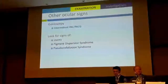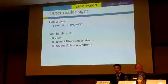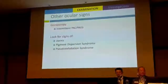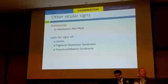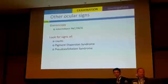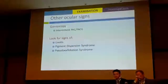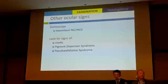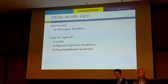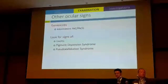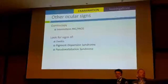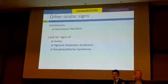We need to perform gonioscopy even as neuro-ophthalmologists, so that we can rule out intermittent angle closure, and we should look for signs of uveitis. It has happened not rarely that patients with a history of Posner-Schlossman syndrome may have normal intraocular pressure at the time of seeing the ophthalmologist, but there are signs suggesting asymptomatic attacks in the past which caused glaucomatous field loss.